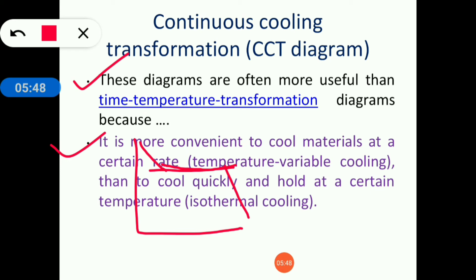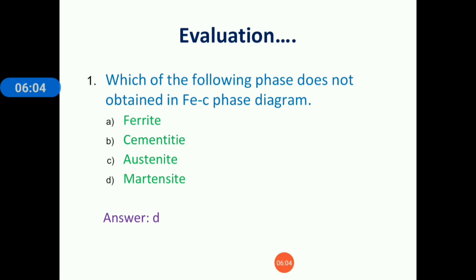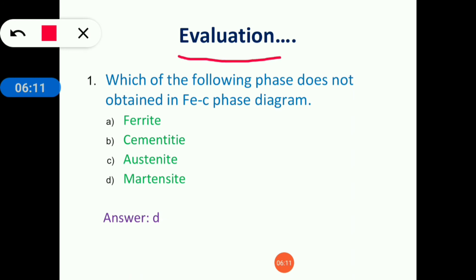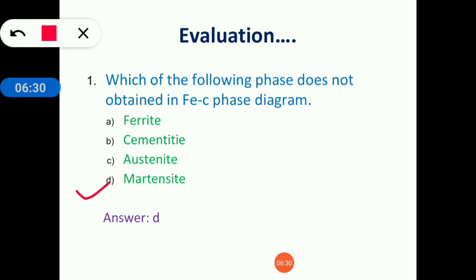This is called isothermal cooling — transformation occurs at constant temperature. Now for exam review: which of the following phases is not obtained in the iron-carbon diagram? Since ferrite, cementite, and austenite form in the iron-carbon diagram, the answer is martensite — martensite is not obtained in the iron-carbon equilibrium phase diagram.